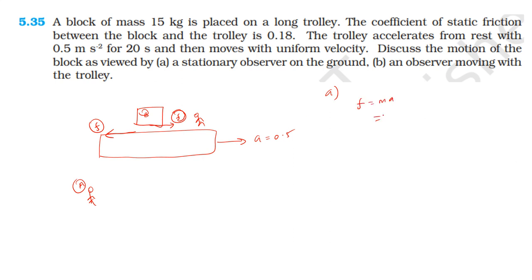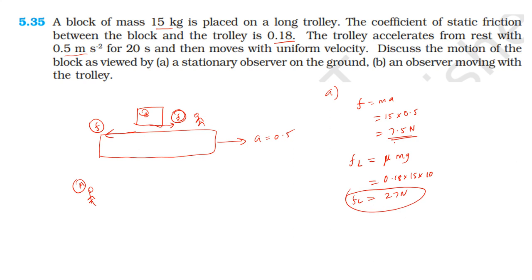The friction force required equals mass times acceleration equals 15 times 0.5 equals 7.5 N. The maximum static friction available equals mu times mg equals 0.18 times 15 times 10 equals 27 N. Since 7.5 N is less than 27 N, the block moves together with the trolley. For the first 20 seconds, friction force of 7.5 N acts and the block accelerates at 0.5 m/s².